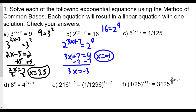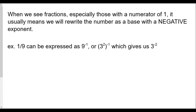For part c, we have 5^(4x − 5) = 1/125. We see base 5 on the left, but 1/125 needs attention. When we see a fraction with numerator 1, we rewrite it as the denominator raised to a negative exponent. For example, 1/9 can be written as 9^(−1) or 3^(−2). So whenever we see 1 over a number, that means the denominator raised to the negative first power, then we change the base using laws of exponents.